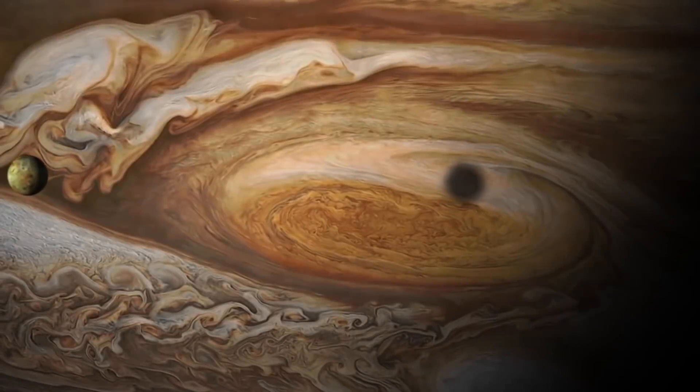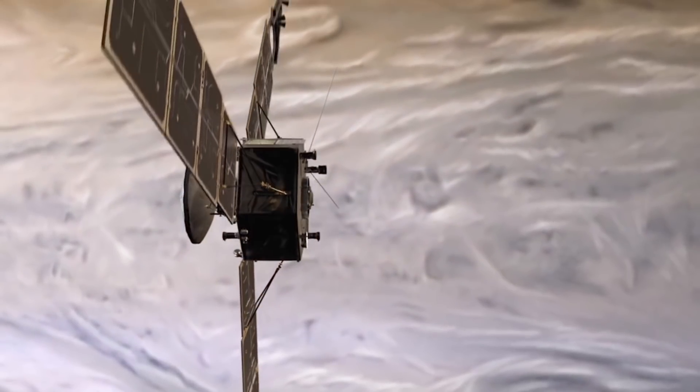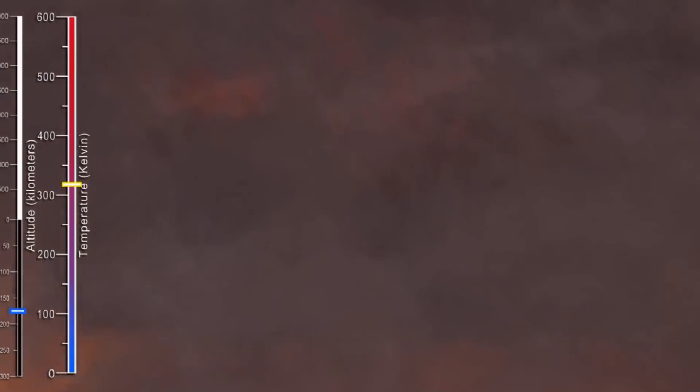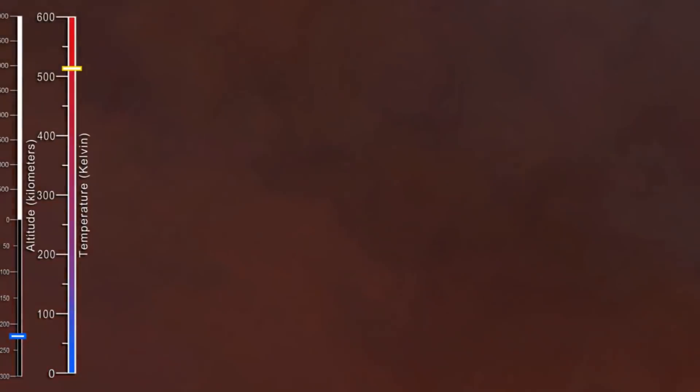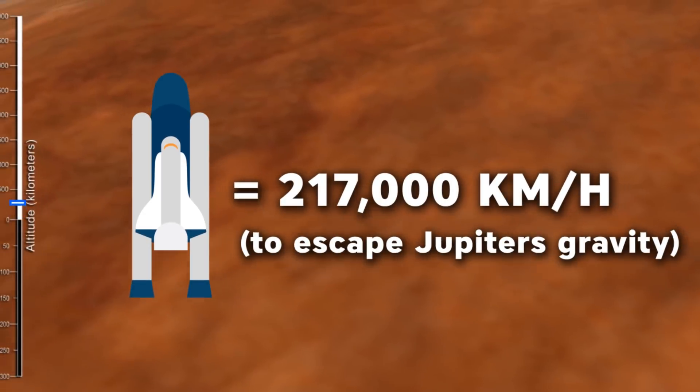Despite being a giant ball of gas you can't fly through like a cloud, its furious storms, ammonia atmosphere and atmospheric pressure would annihilate any organism and dismantle spaceships. Its gravity is so strong that a rocket would have to go an unthinkable 217,000 kilometers per hour to leave.